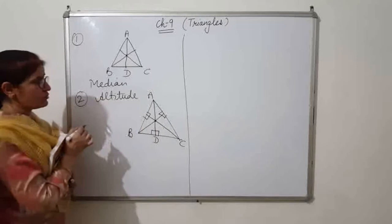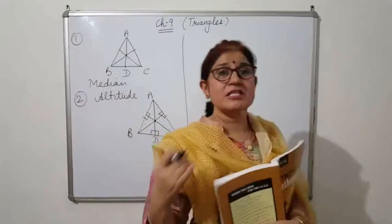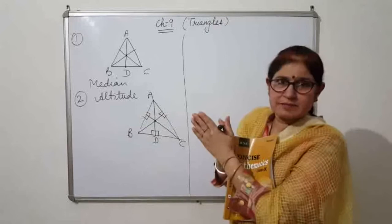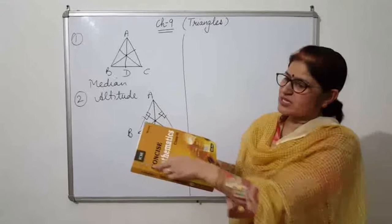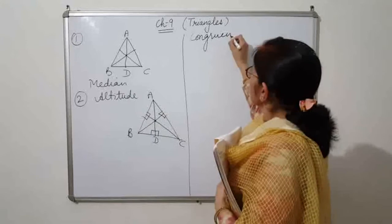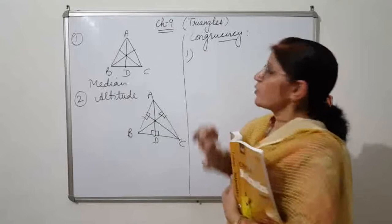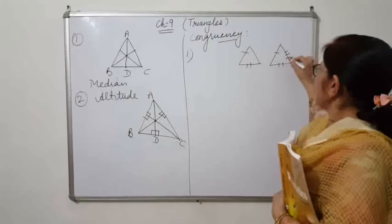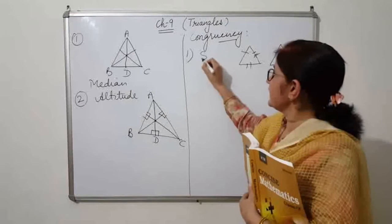This chapter is basically based on congruency of triangles. Congruency means when one thing covers another exactly — like my hands, or the pages of a book where one page covers another from each and every angle exactly, so they are congruent to each other. There are different properties or axioms. If all three sides of two triangles are equal, then we follow the side-side-side property.